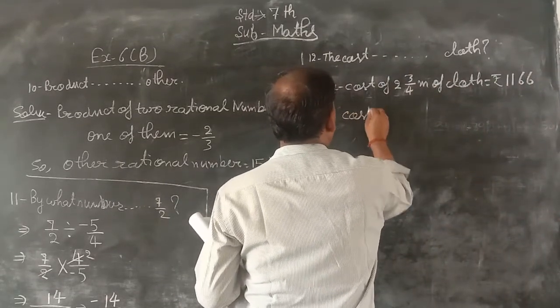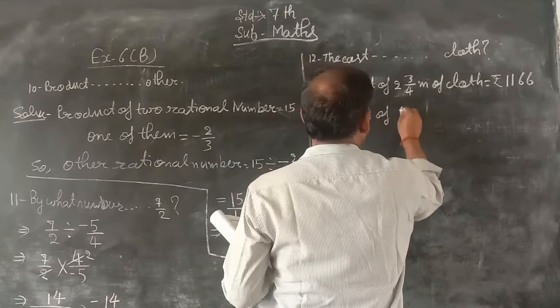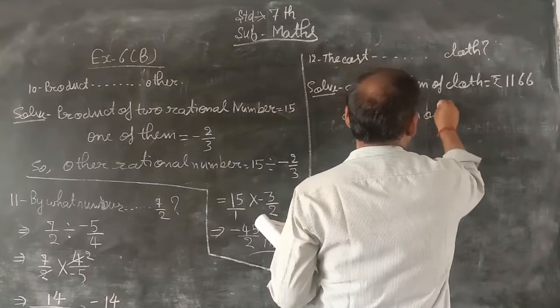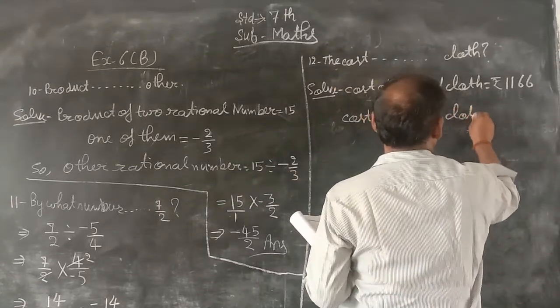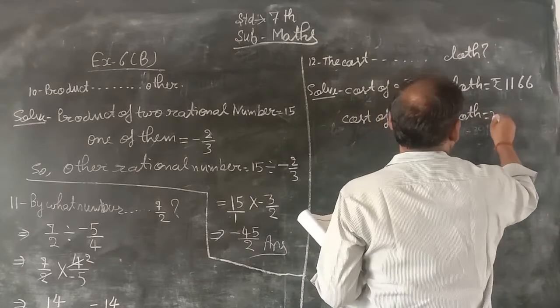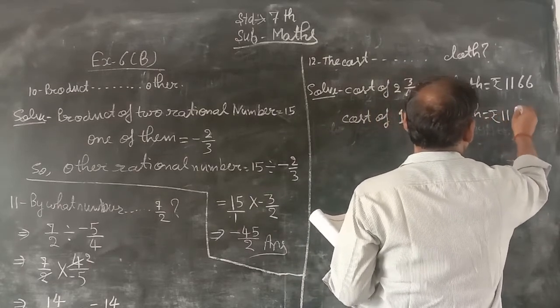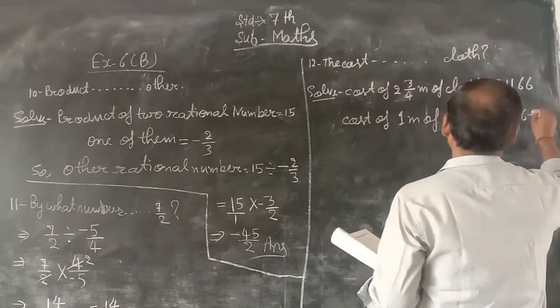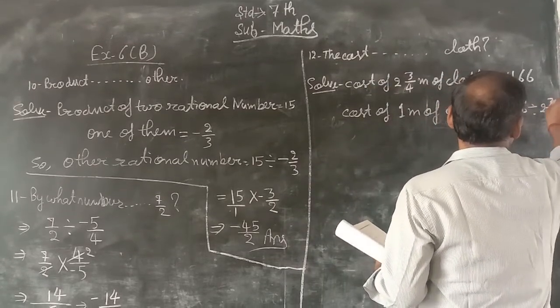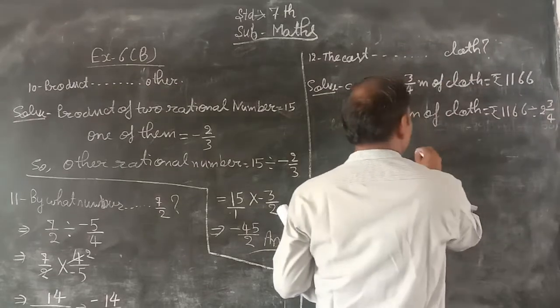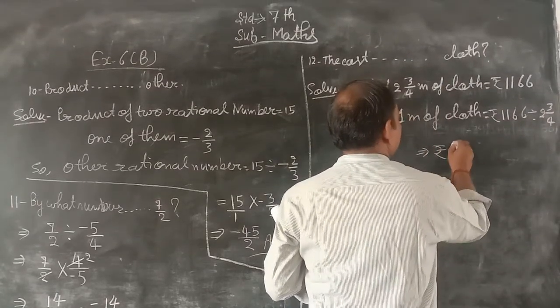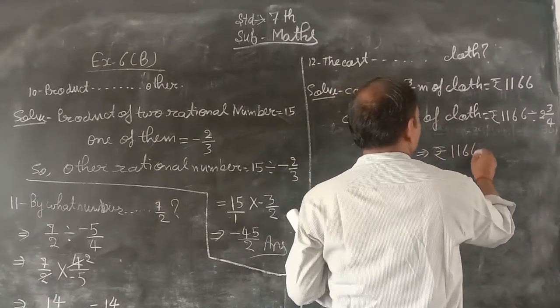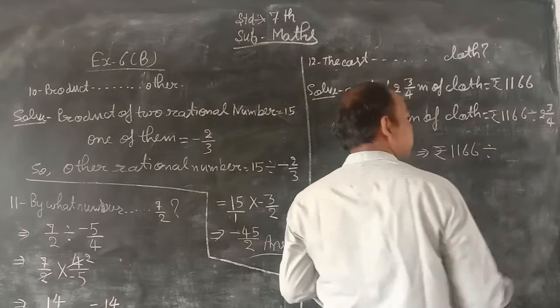So the cost of one meter of cloth is equal to rupees 1166 divided by 2 and 3 upon 4.